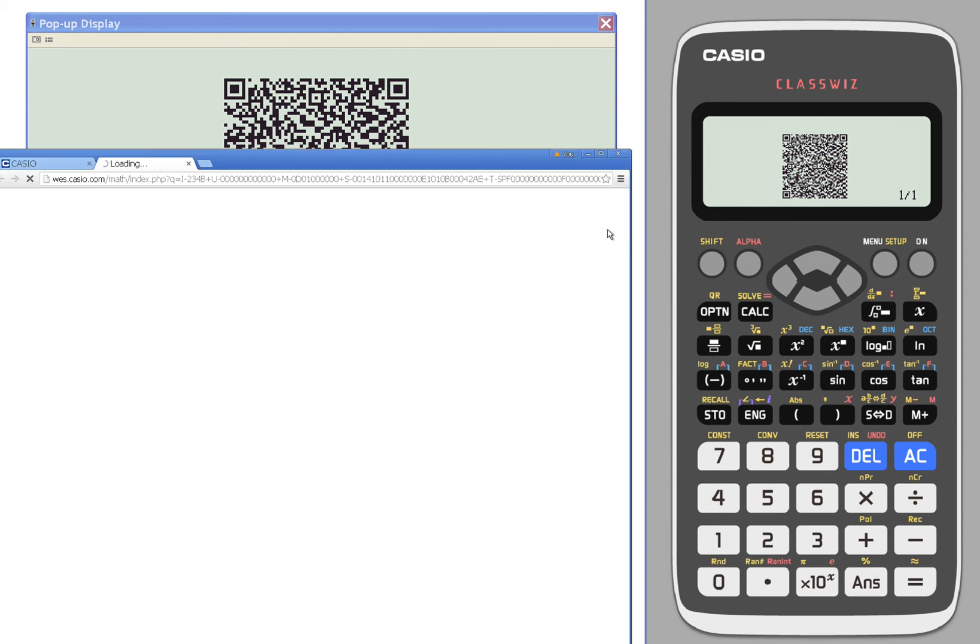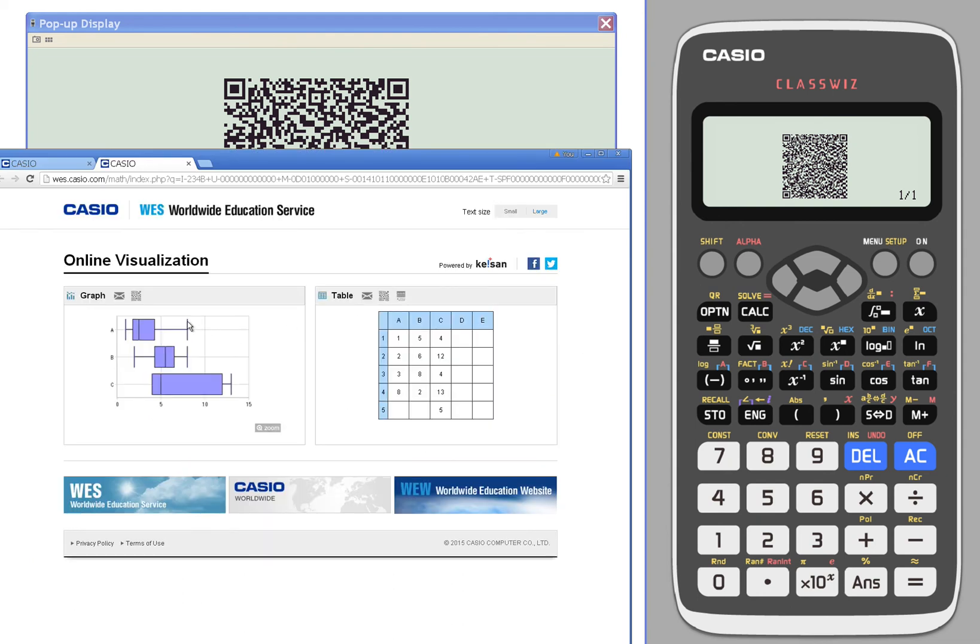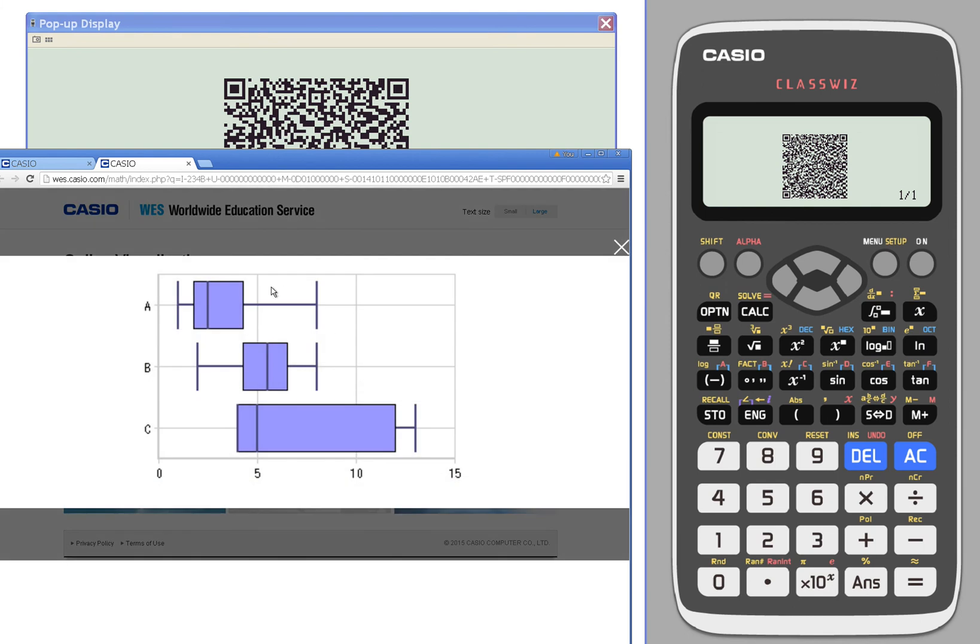When I generate my QR code, it will give me a box and whiskers plot for each one. You can copy and paste those, zoom in.